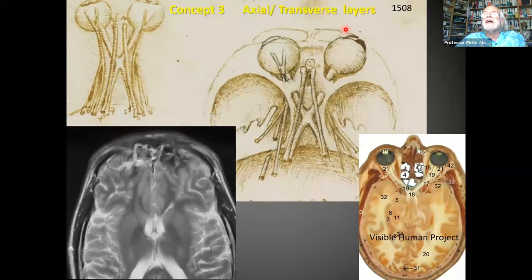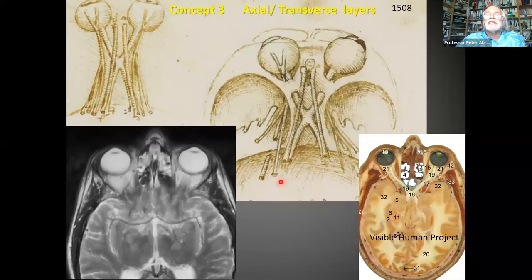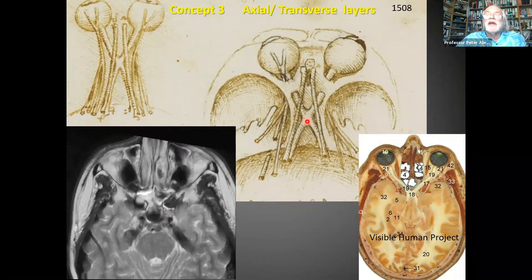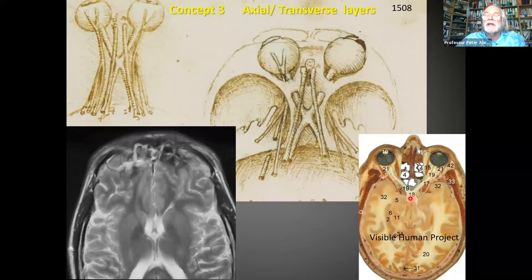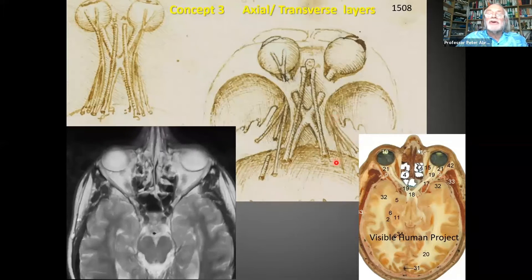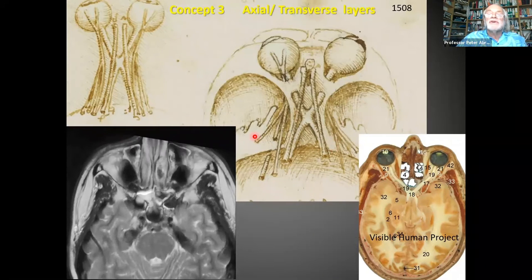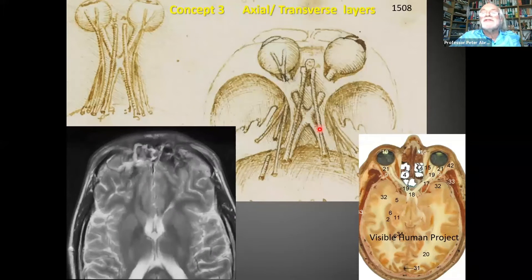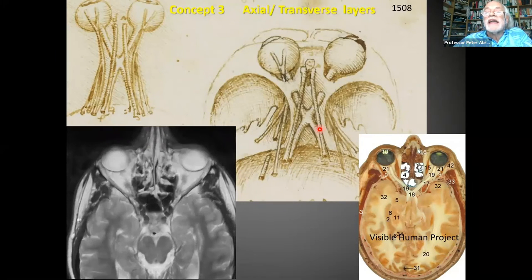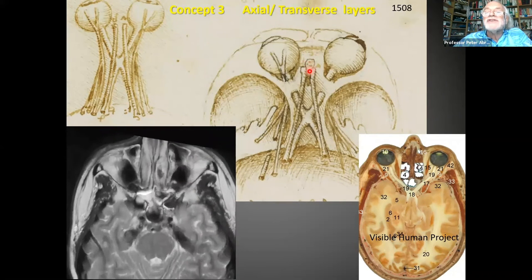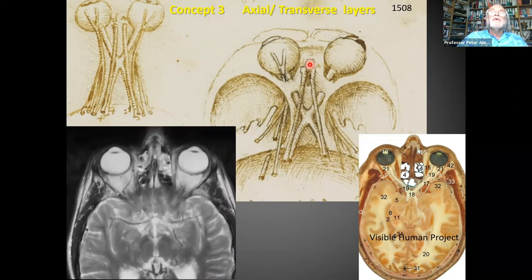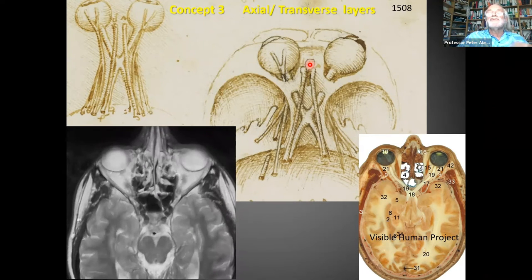Another concept was looking at axial and transverse layers. Here we're looking at the two eyes; he's sliced across, and as you can see from this axial CT, you can see the optic chiasma — also visible on a modern dissection from the Visible Human Project. He actually correctly drew all the nerves going through this area, known as the cavernous sinus. So here we have a guy who not only is dissecting everything for the first time, but is drawing it correctly, even showing the little cribriform plate — the holes in the top of the ethmoid bone — to allow the first cranial nerve to pass through.